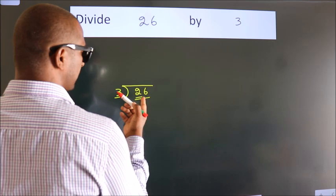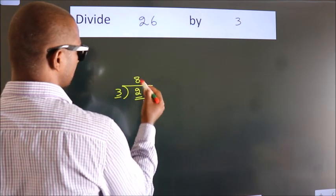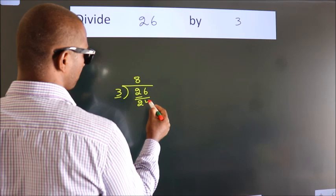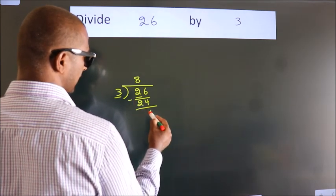A number close to 26 in 3 table is 3 times 8 equals 24. Now we should subtract. We get 2.